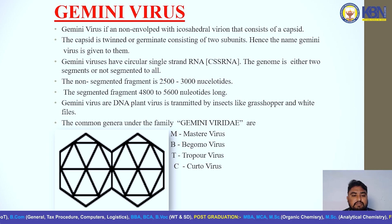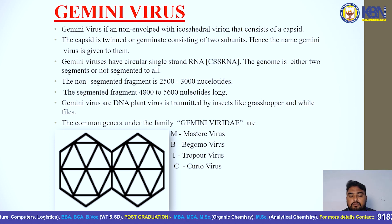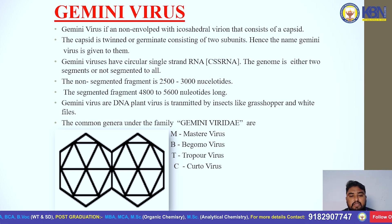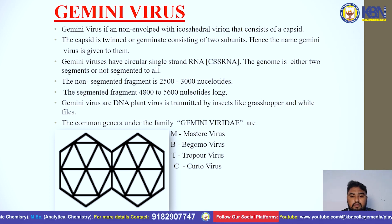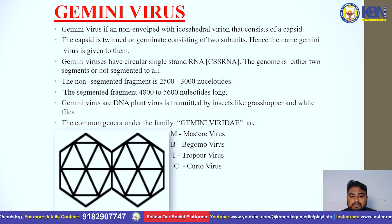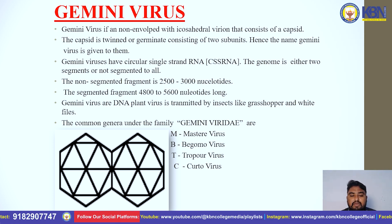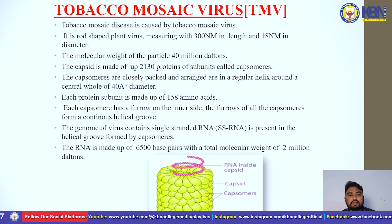The genome is either two segments or non-segmented. The non-segmented genome is 2500 to 3000 nucleotides; the segmented genome is 4800 to 5600 nucleotides long. Gemini viruses are DNA plant viruses transmitted by insects like grasshoppers and whiteflies. The common genera under the family Geminiviridae are Mastrevirus, Begomovirus, Topocovirus, and Curtovirus.